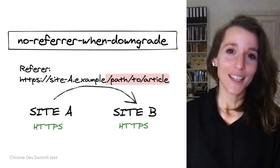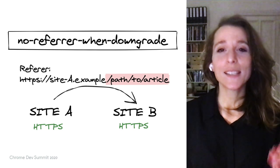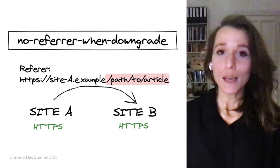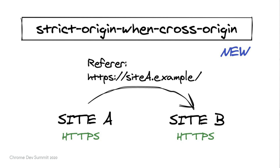Speaking of things we've launched — referrer and referrer policy. Chrome's previous default referrer policy was no-referrer-when-downgrade: for HTTP requests going from site A to site B, site B would see the full URL of the requesting page in the referrer header, except for downgraded requests where no referrer header was sent. Chrome moved to a new default policy, strict-origin-when-cross-origin, meaning the referrer header sent to site B is only the origin of site A — no more path information. For downgraded requests, there is still no referrer sent.